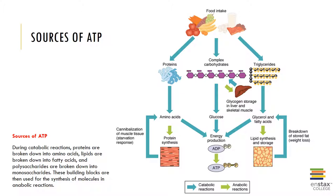thereby conserving glucose for neural tissues. Liver cells store triglycerides and glycogen reserves. If absorption by the digestive tract fails to maintain normal nutrient levels, the triglycerides and glycogen are broken down and the fatty acids and glucose are released for cells to burn. Adipocytes can convert excess fatty acids to triglycerides for storage. If absorption by the digestive tract and reserves in the liver fail to maintain normal nutrient levels, the triglycerides are broken down and the fatty acids are released for cells to burn. Skeletal muscles at rest metabolize fatty acids and use glucose to build glycogen reserves.